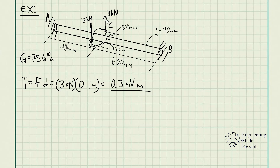To solve for the couple moment, we have two equal and opposite forces acting on each of the ends. The torque equals that force times the distance between the two equal and opposite forces. So 3 kilonewtons times 0.05 meters, plus the other one since both torques act in the same direction — you add them up and get 0.3 kilonewton meters. This couple moment is applied counterclockwise to the shaft.